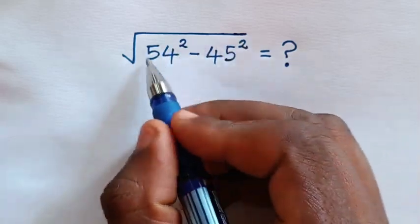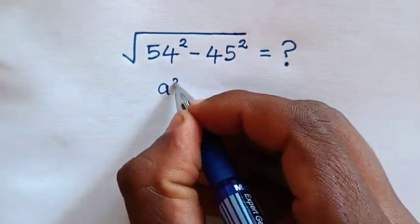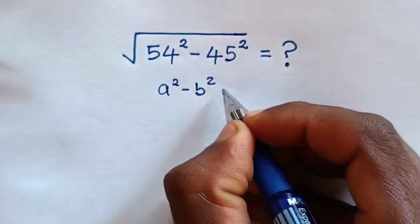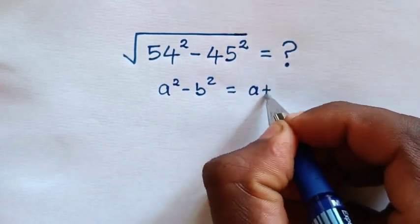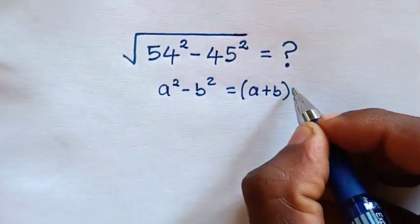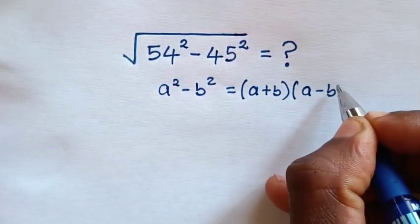From this expression, inside the square root is in the form of a squared minus b squared equals a plus b times a minus b.